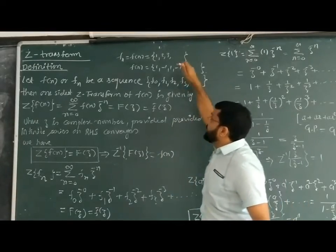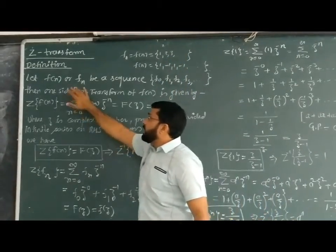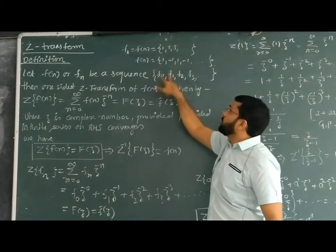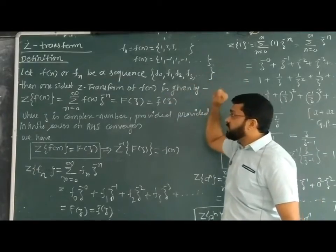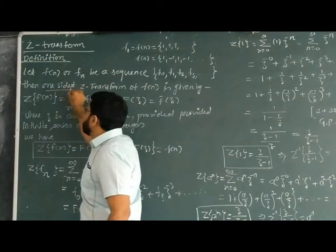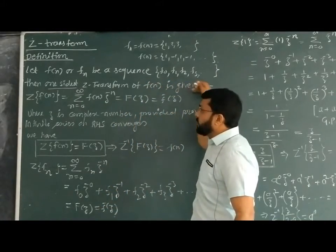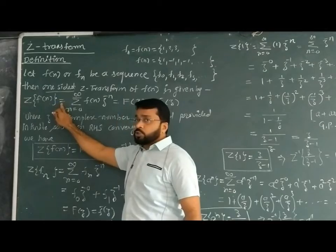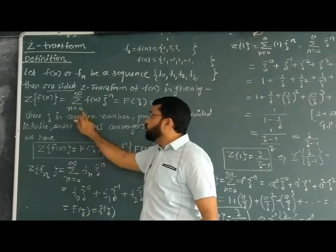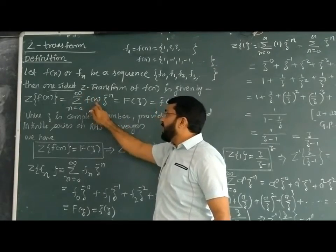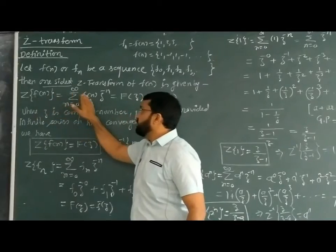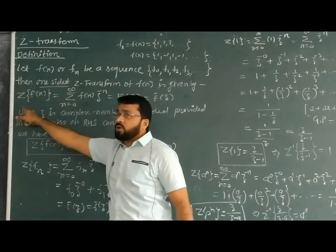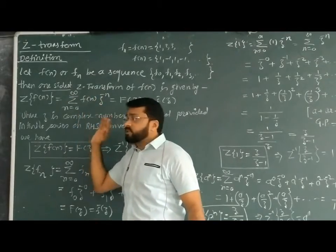We define the Z-transform over such a sequence. Let f(n) be a sequence denoted as f0, f1, f2, f3, and so on. The one-sided Z-transform of f(n) is given by: Z{f(n)} equals the summation from n = 0 to infinity of f(n) multiplied by z to the power minus n. This summation is called the Z-transformation of f(n), provided this summation exists.